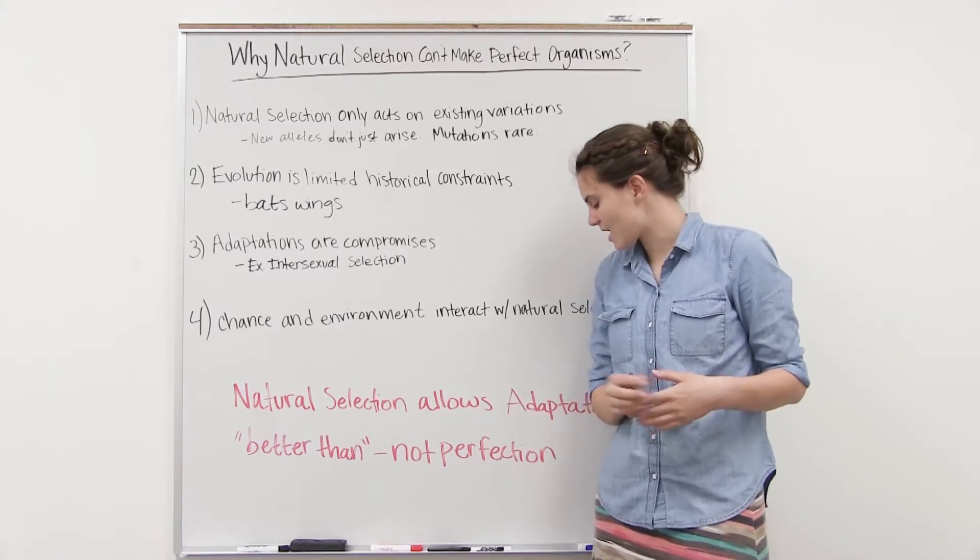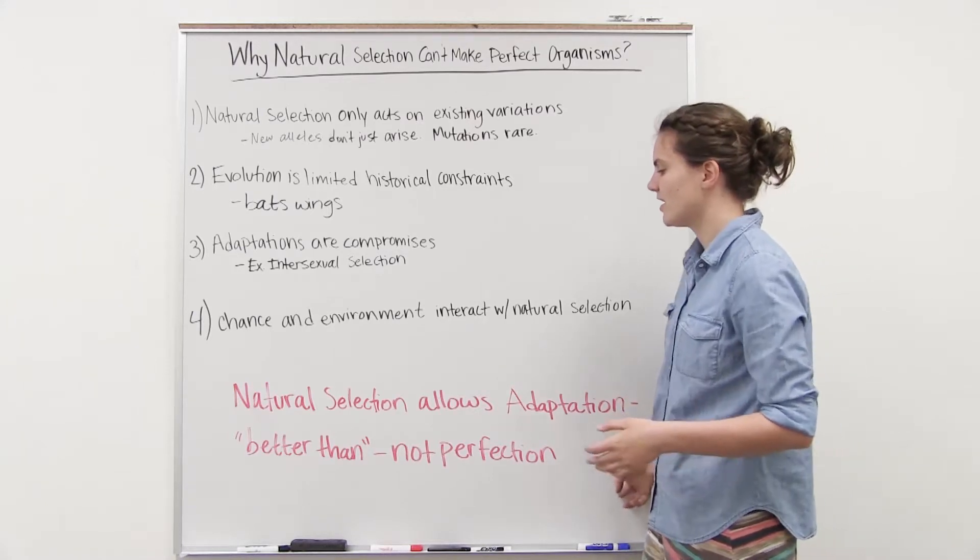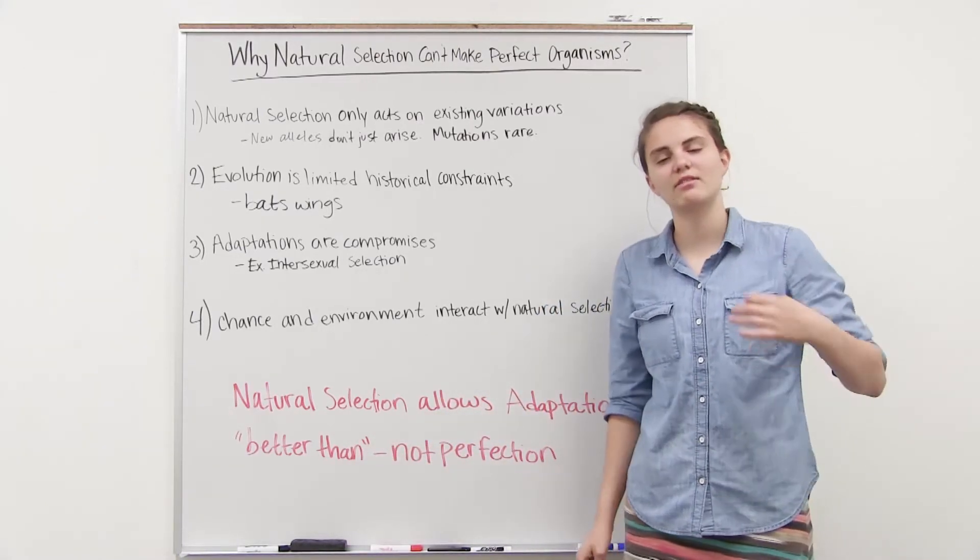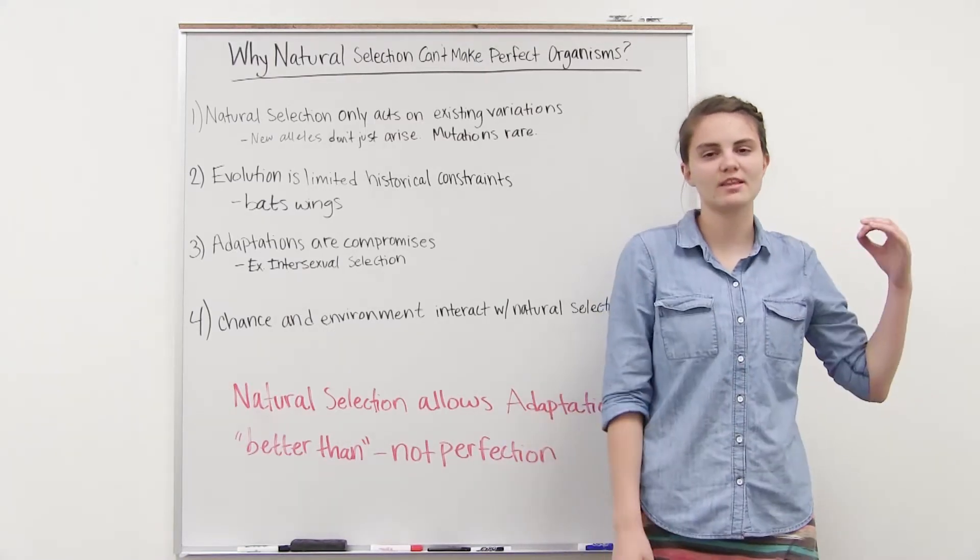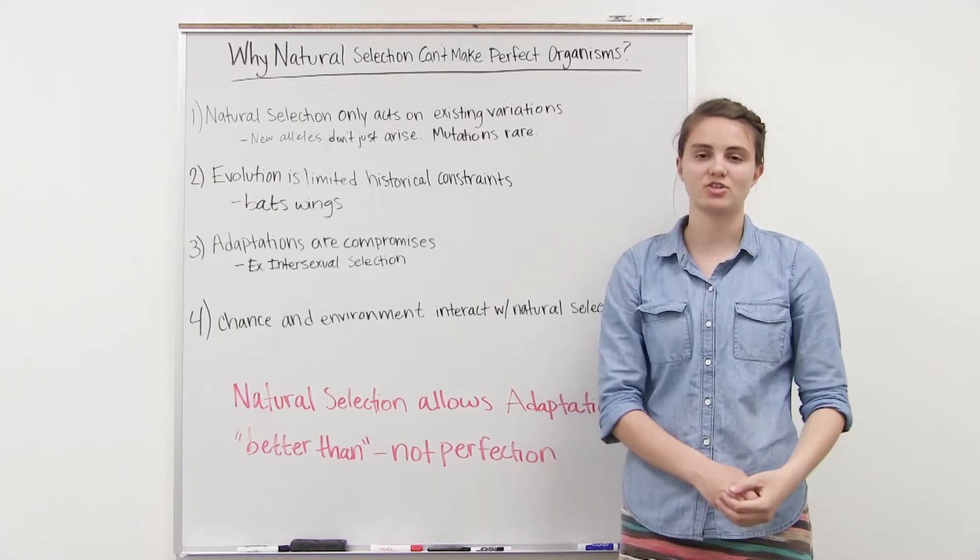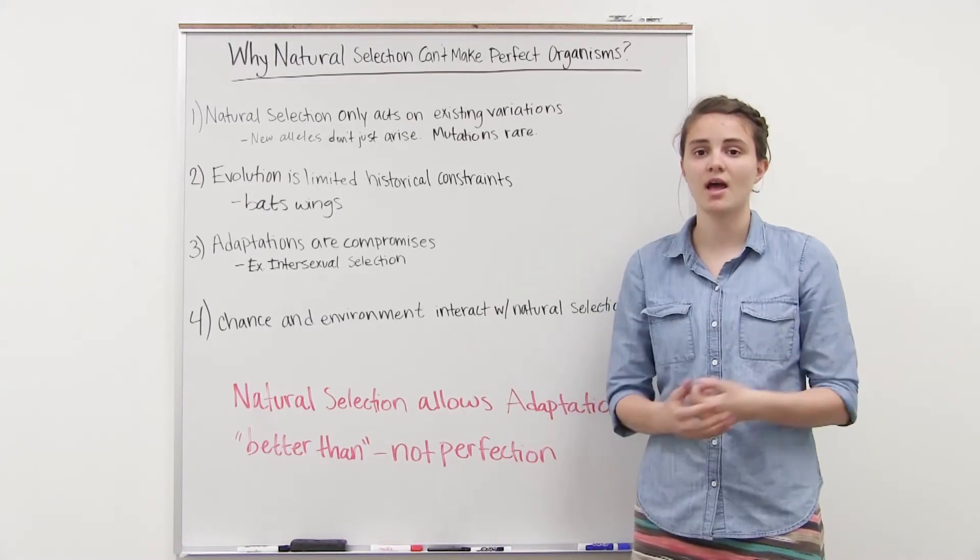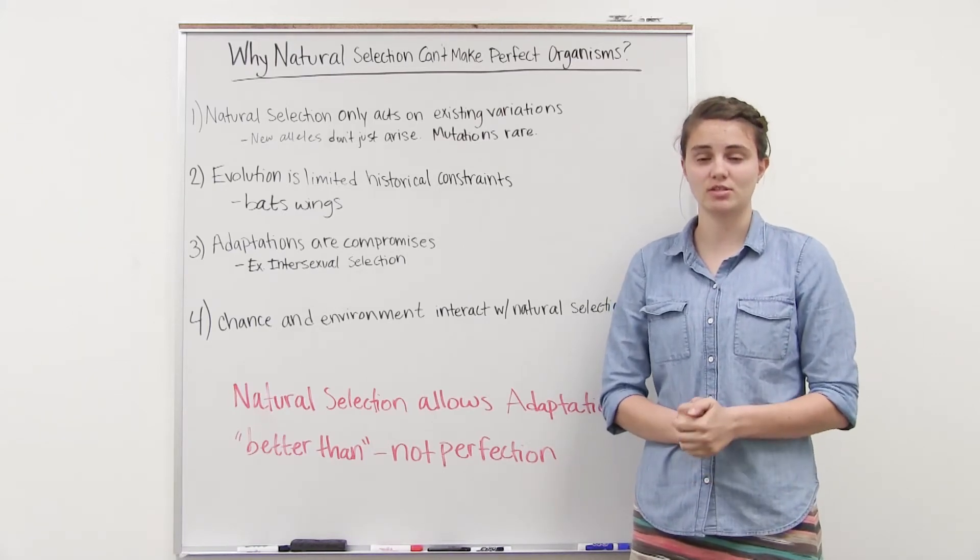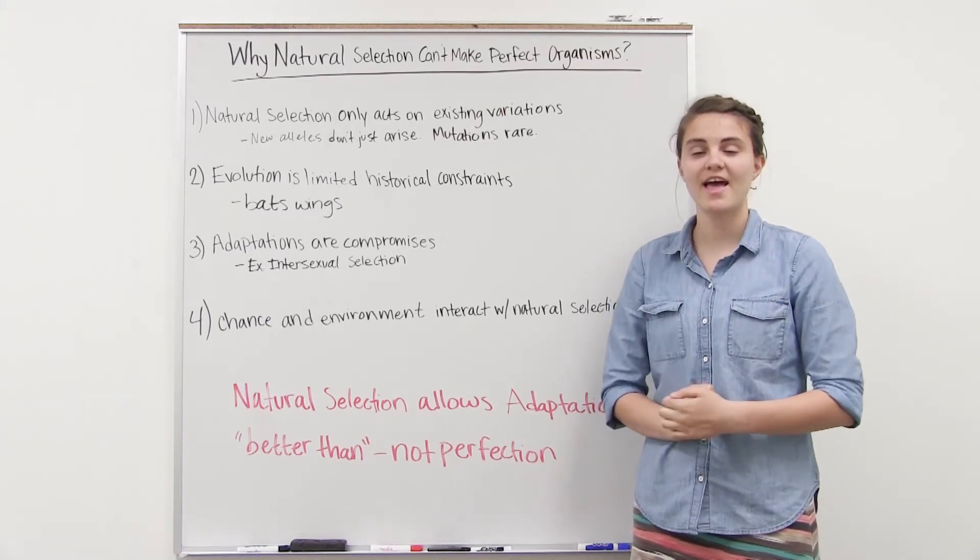But the bottom line is that natural selection allows adaptation. It allows better than. Having this trait is better than having this trait. Having this trait makes me more likely to survive than this organism. It does not create perfection to the environment. I hope that was helpful. I hope you have a better understanding of why natural selection does not fashion perfect organisms. Thank you for watching.